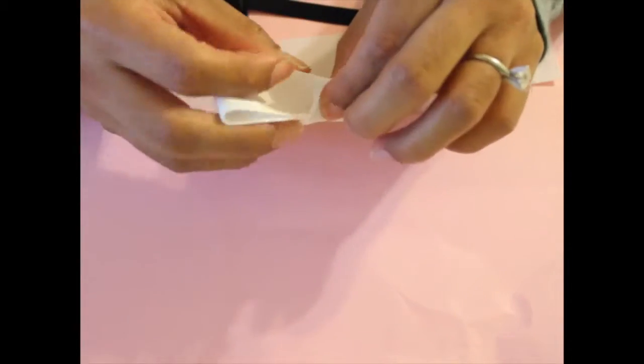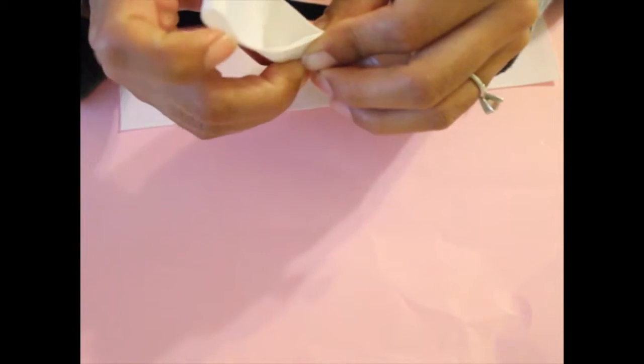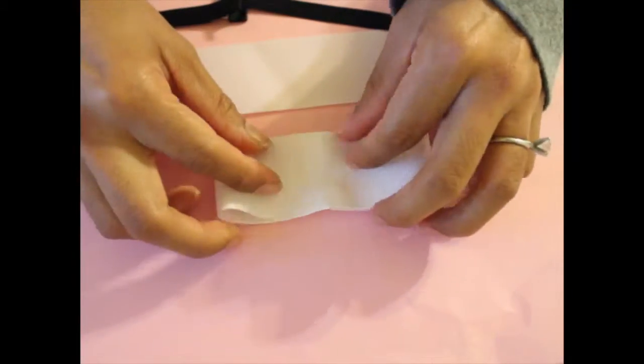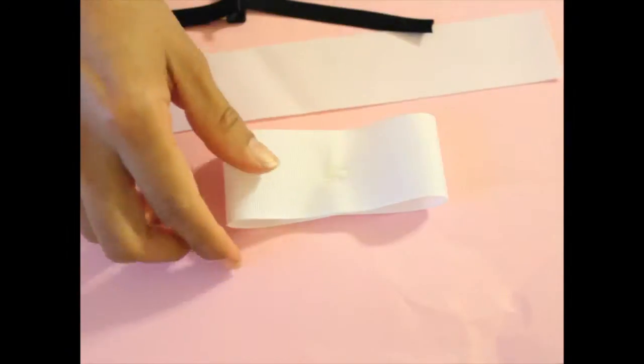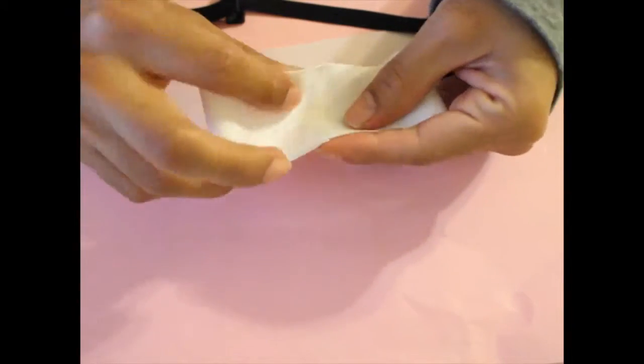So once you've done that you're going to fold the ribbon in half just to find the center of that ribbon. You can see the center right there, center crease. Put a dab of glue right there and then fold it in half.